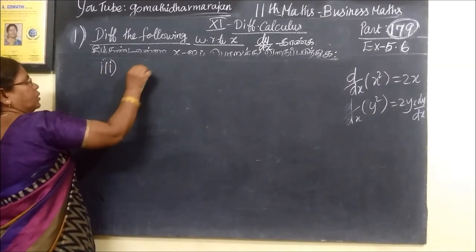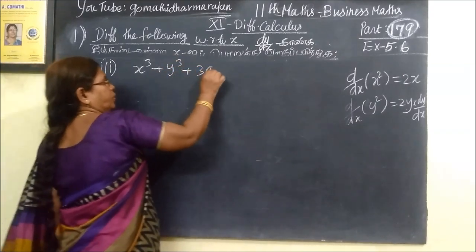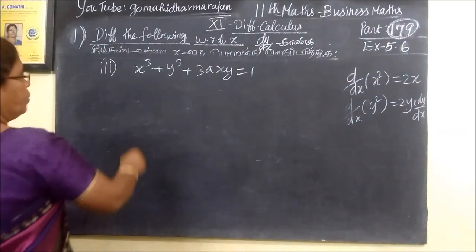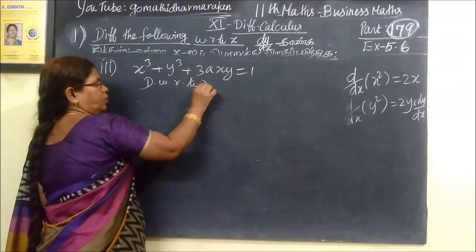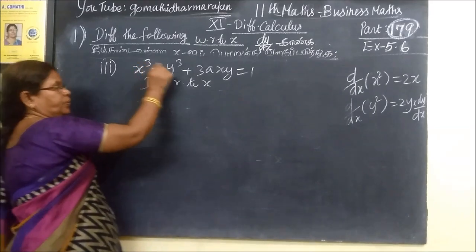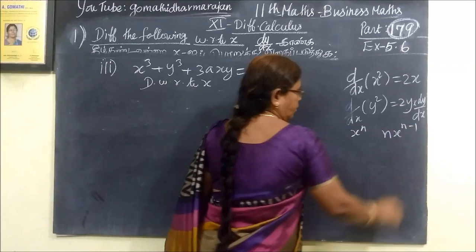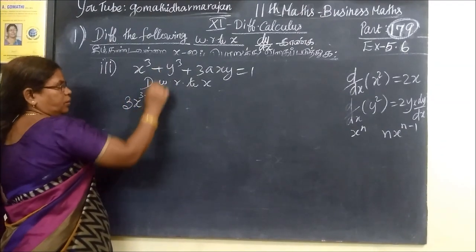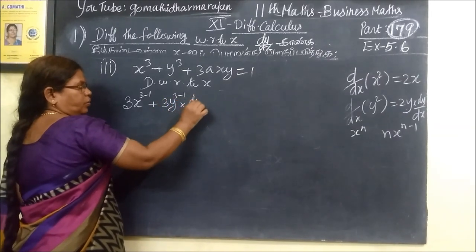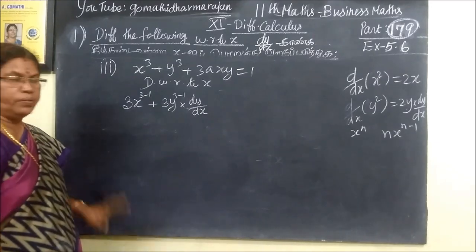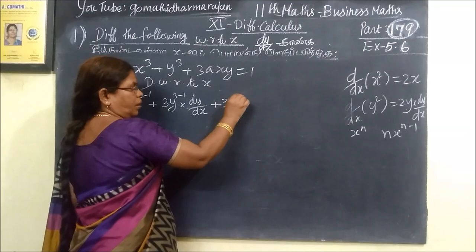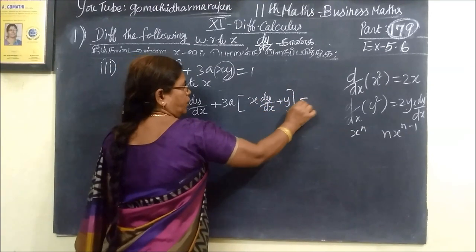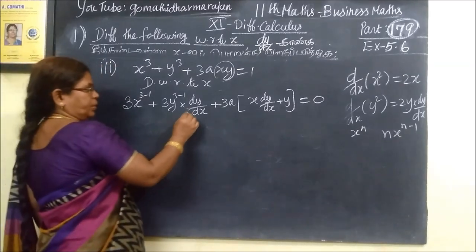This is how we differentiate with respect to x. For the variable, the differentiation is x power n to n times x power n minus 1. So x power 3 minus 1. But y changes to dy/dx.